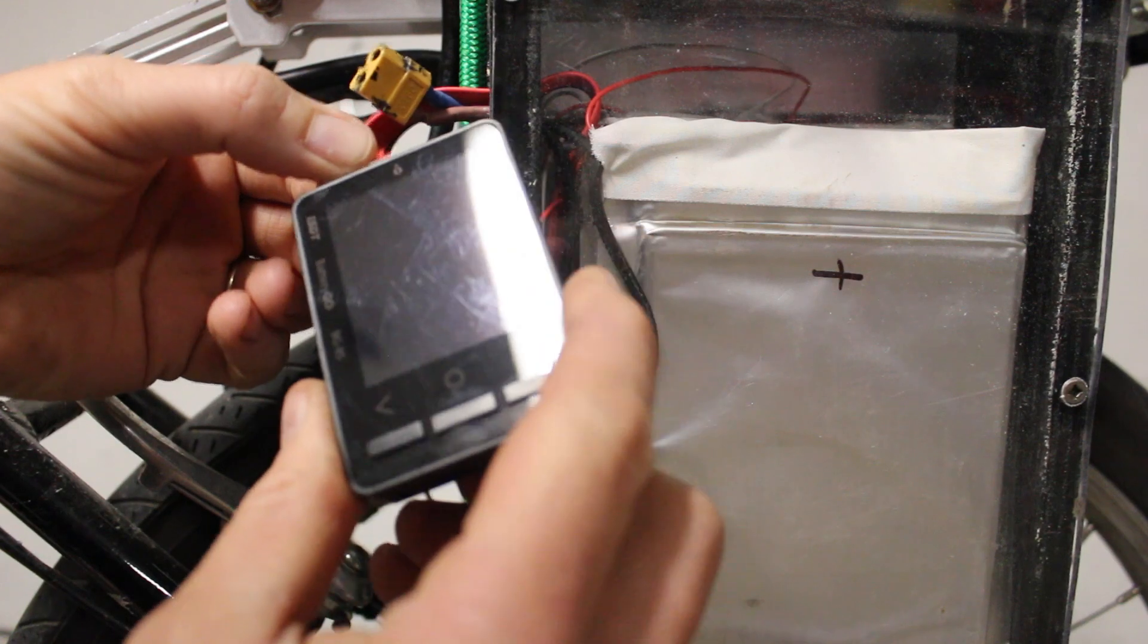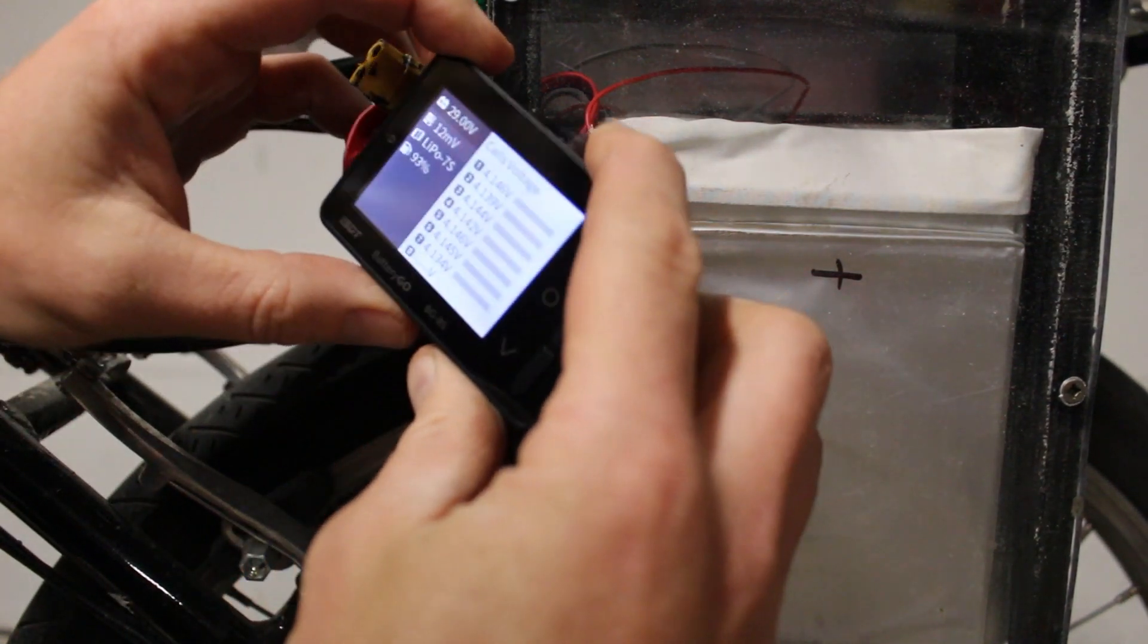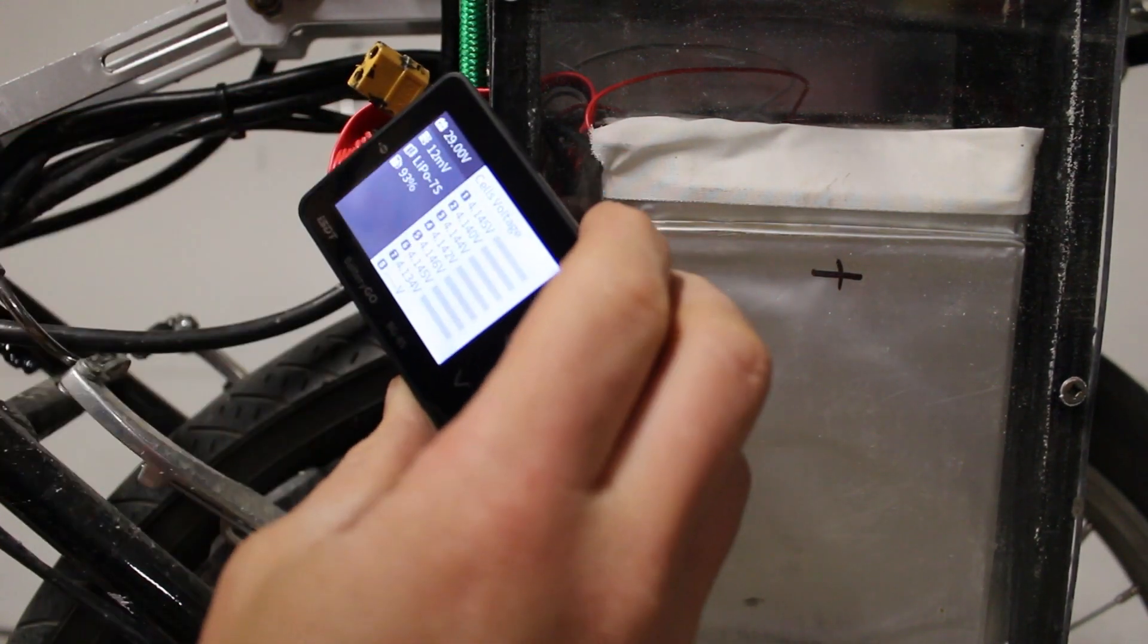I find the battery balancer is able to keep the cells within about 20 millivolts normally, well within acceptable range.